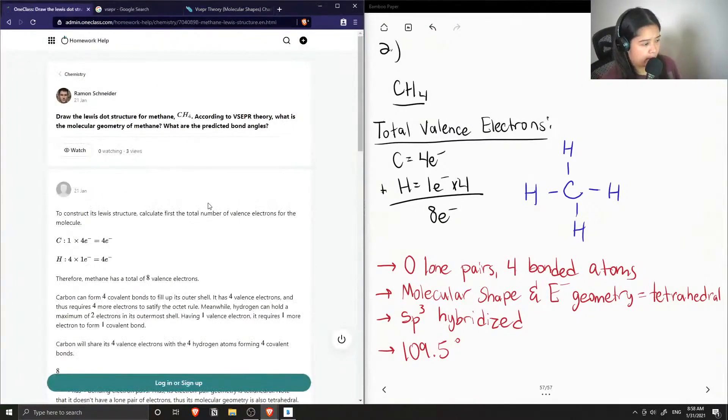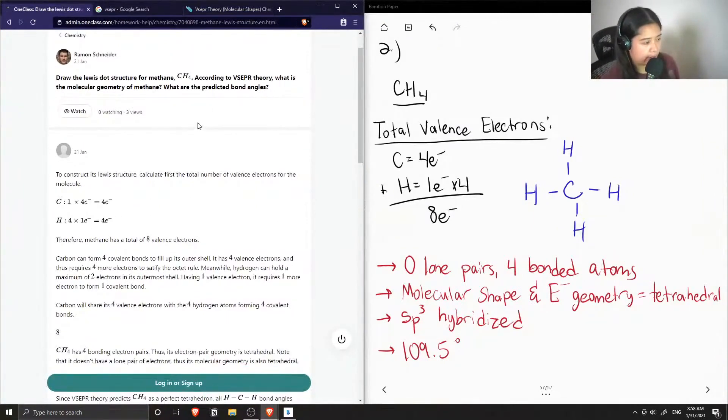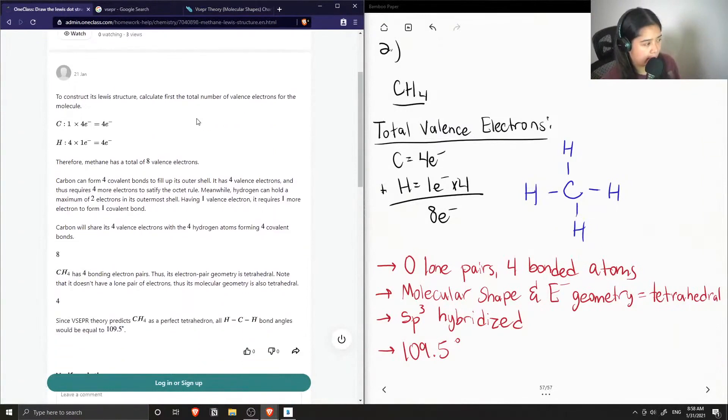The tutor said we first need to calculate the number of valence electrons, which is eight.